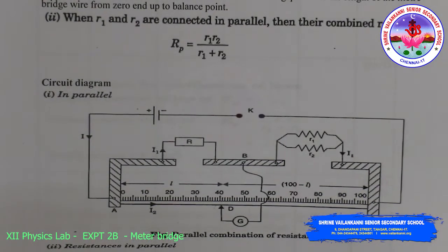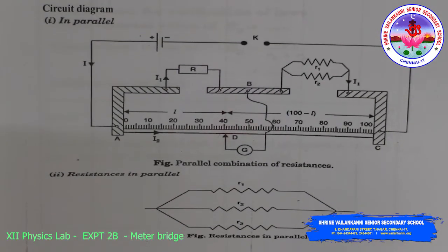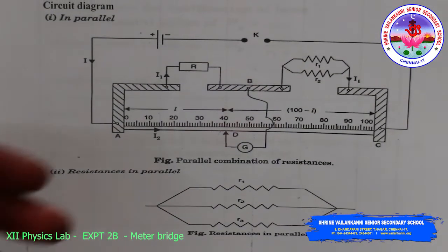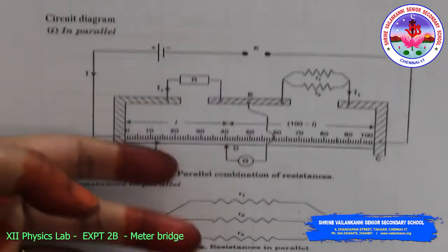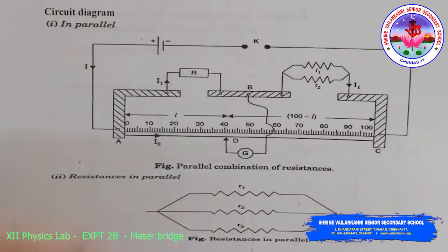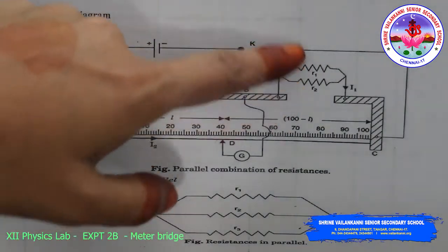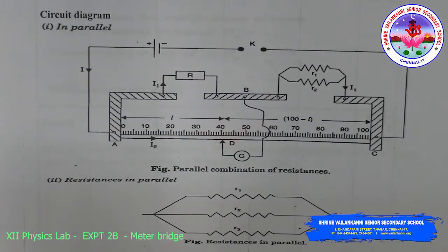See in the circuit diagram which is same as the series connection. All the connections are the same. Only when you are connecting the resistance wire, you have to connect it here in parallel. Let us see the connections.